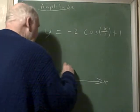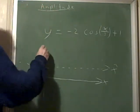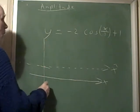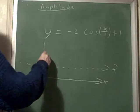So this is 1, and we know it's going to go down 2 units, so it's going to go down as low as negative 1, and it goes as high as 3.